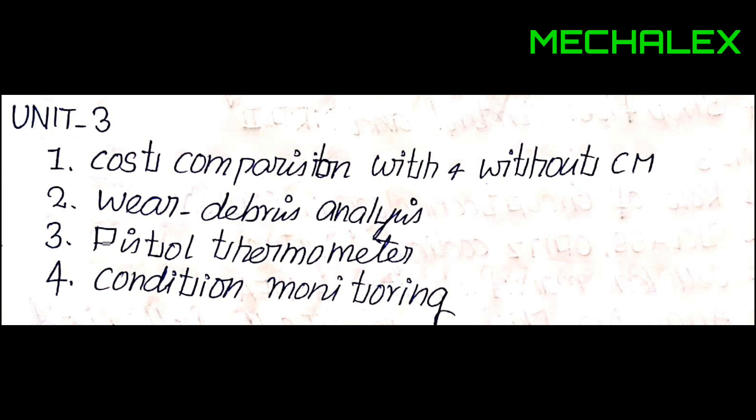The third one is a pistol thermometer — the thermometer can be used as a temperature-based machine monitor. In case the machine has a working condition, it measures temperature. For example, the first one is a cost comparison.